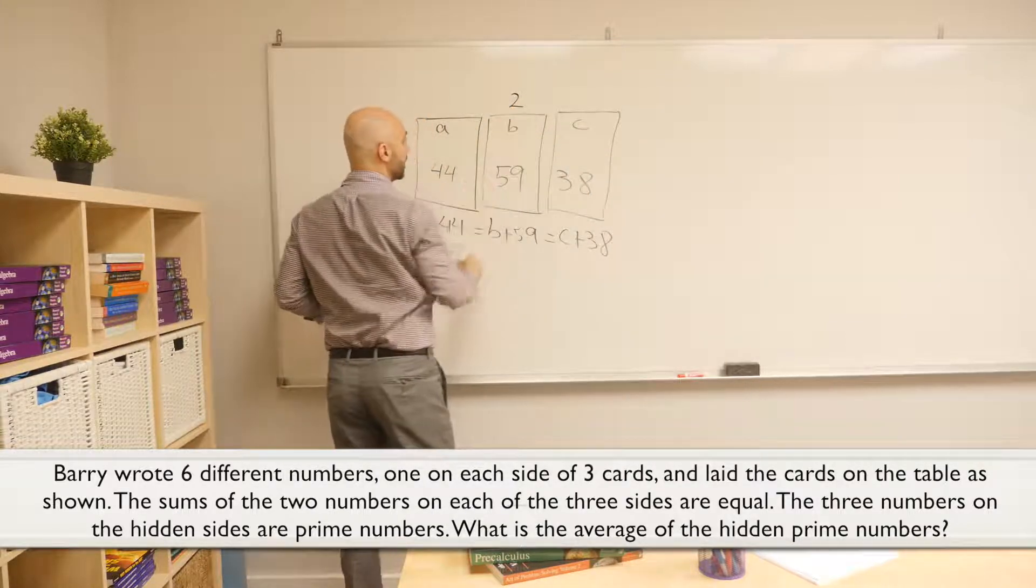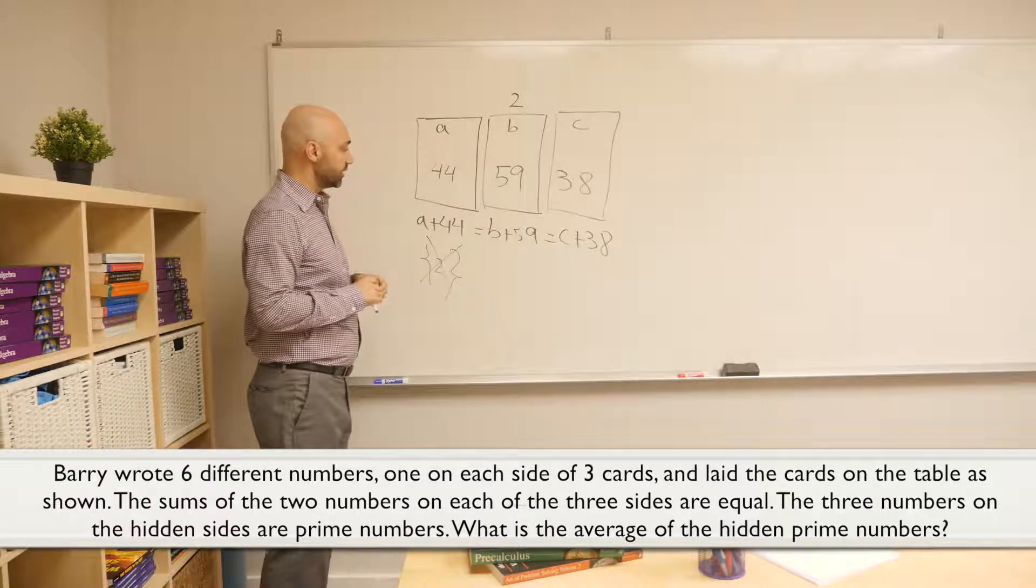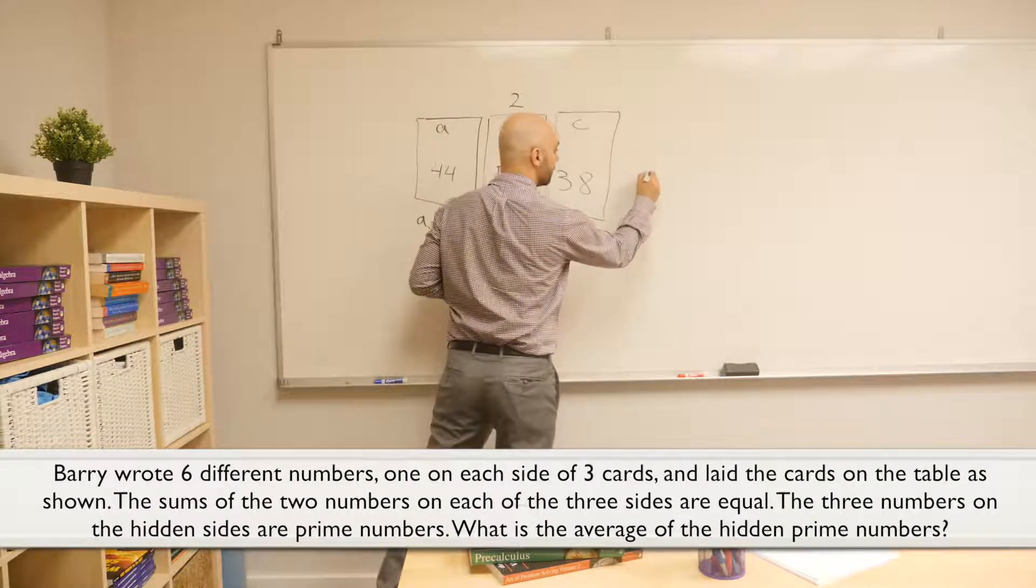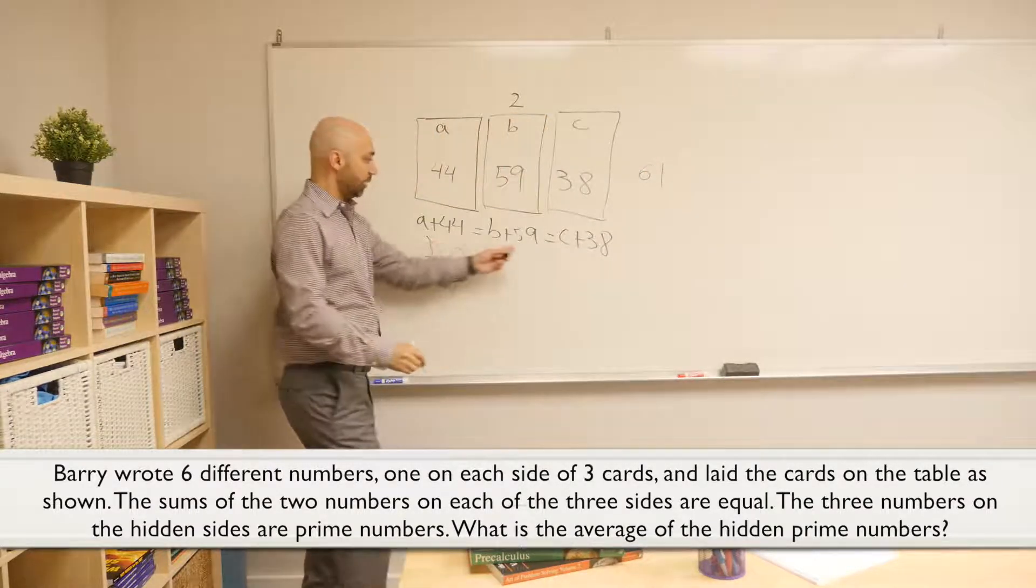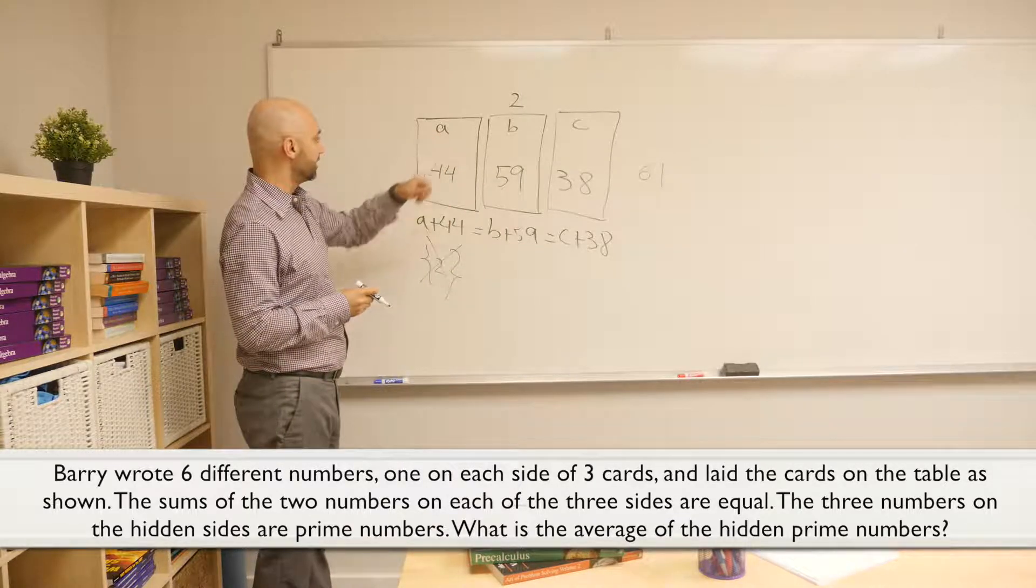So we got to have a two, and that two has to be behind the second card. That gives us the sum of the numbers for the second card. Two plus 59 is 61. And based on the assumption of the problem, all the numbers should add up to 61. That makes it very easy to find A and C.